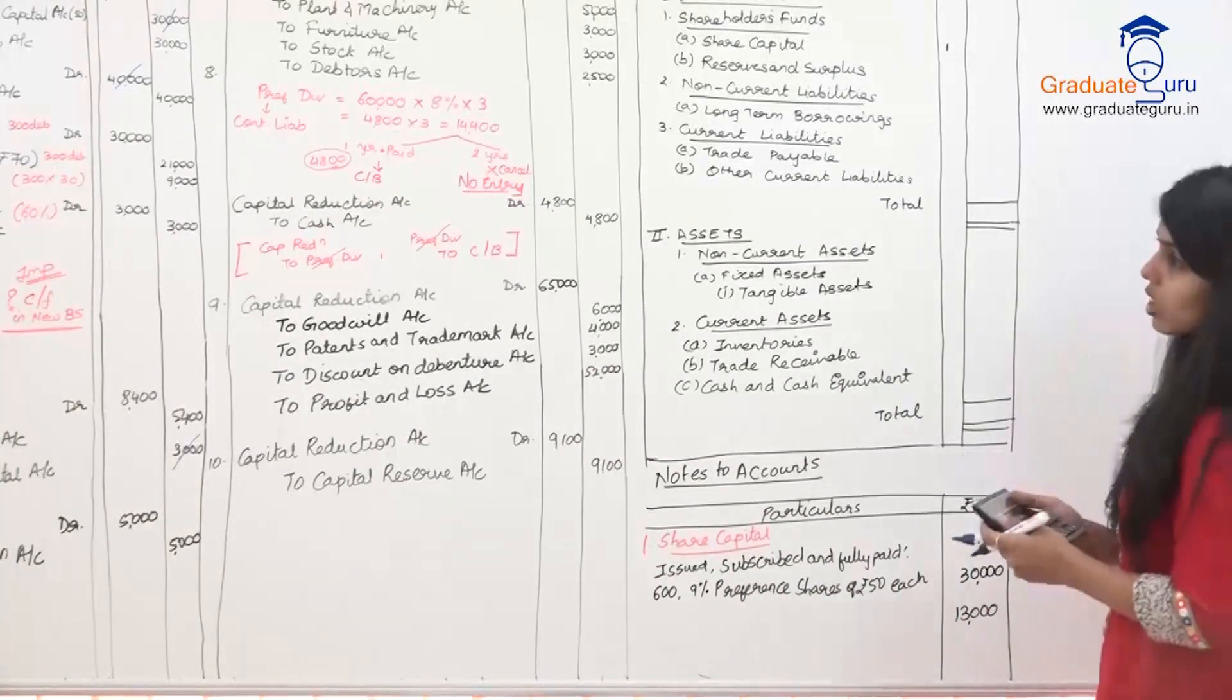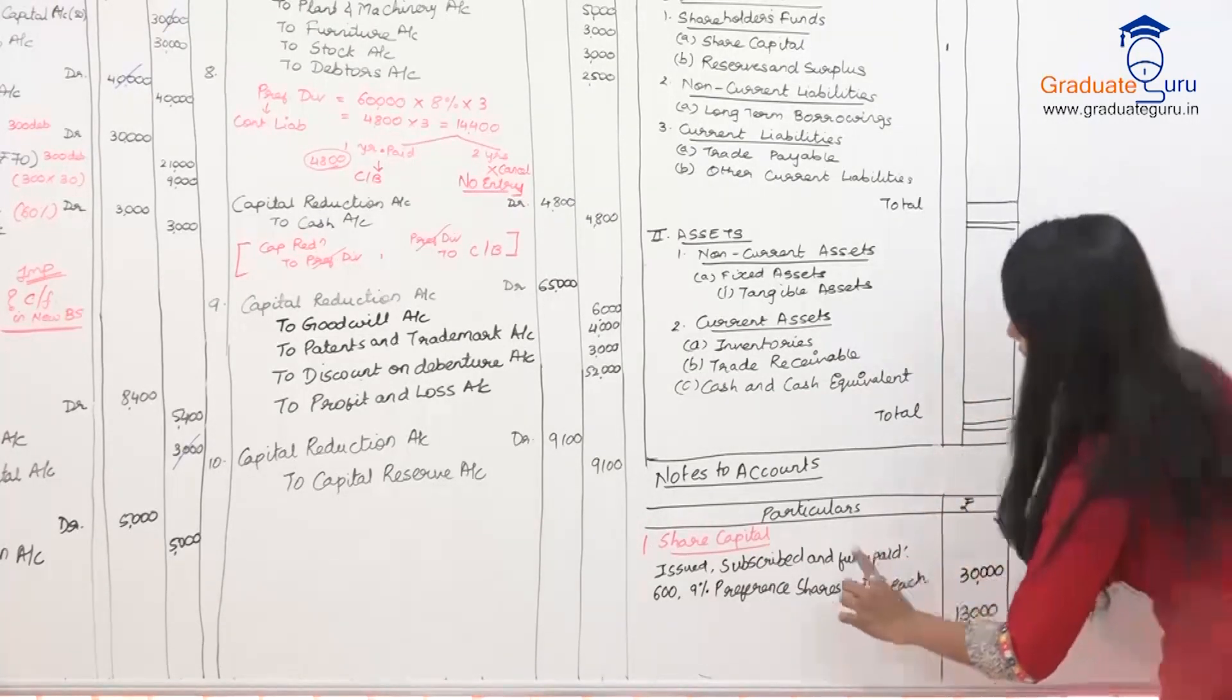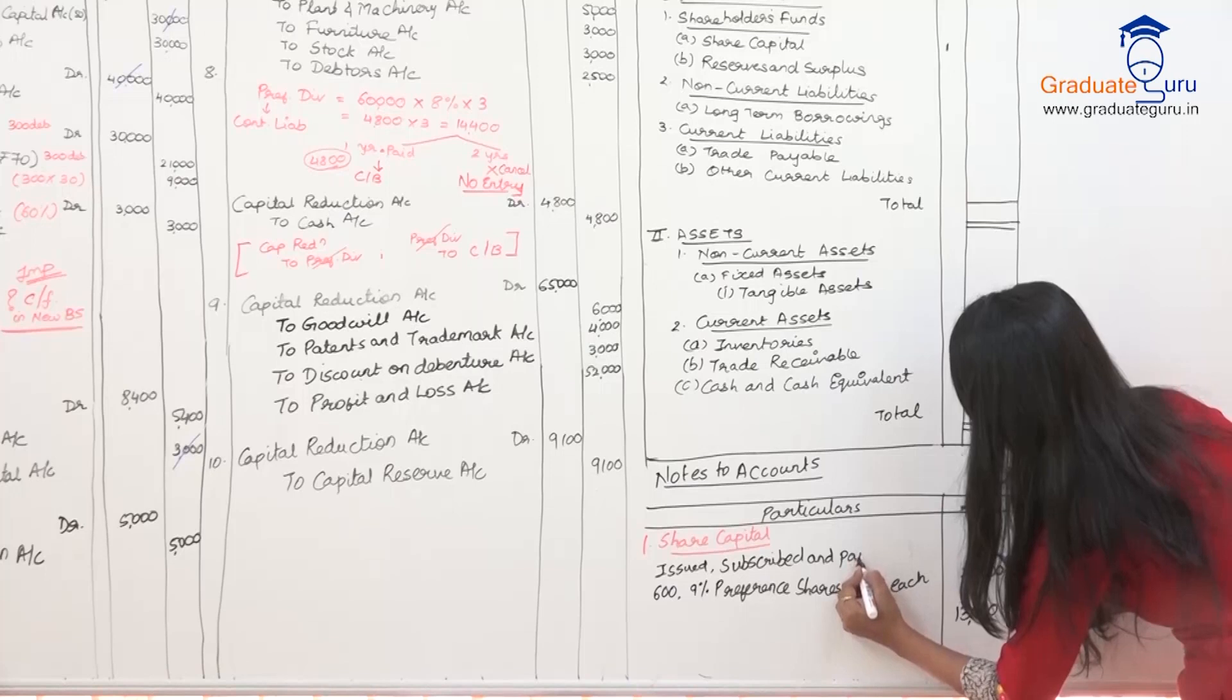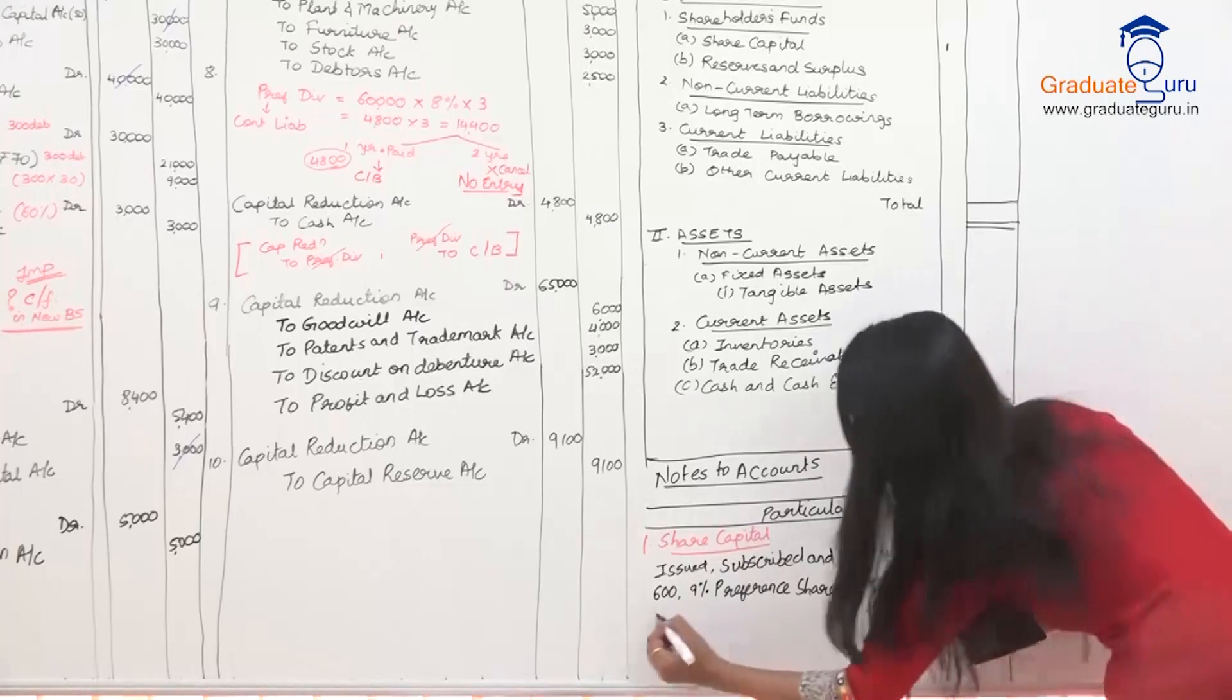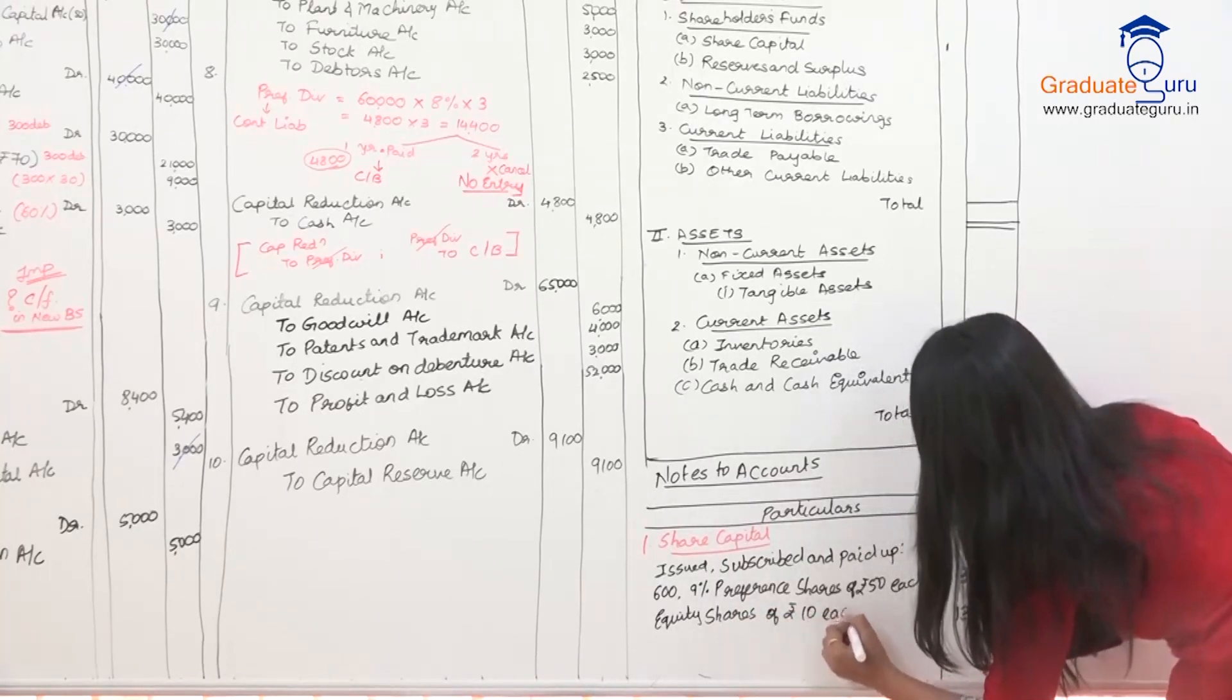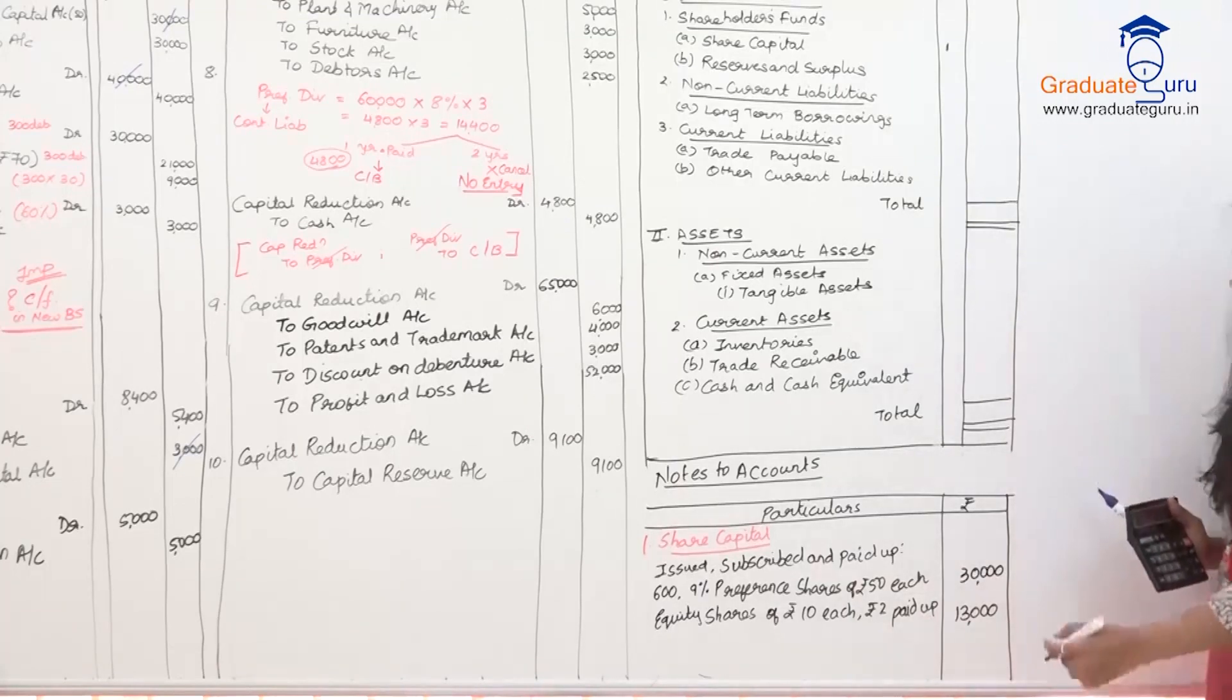Now, the Rs. 13,000 is my preference. It is Rs. 2,000. You should subscribe and paid up, and it should be equity shares of rupees 10 each because the base value remains the same rupees, to paid up and it should be 13,000.